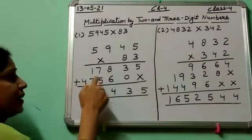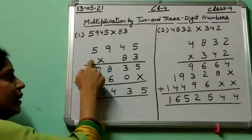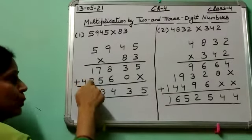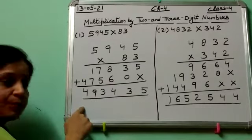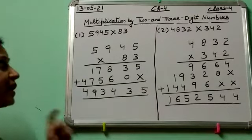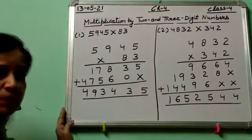1 plus 7 is 8. 8 plus 5 is 13, 1 carry. 1 plus 2 is 3. 3 plus 7 is 9, and this is 4. In this way you have to multiply a given number by a 2 digit number.